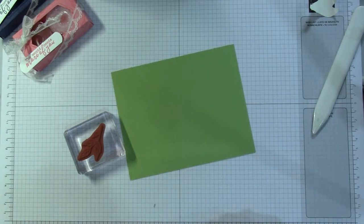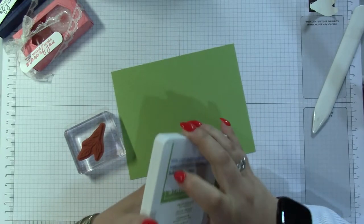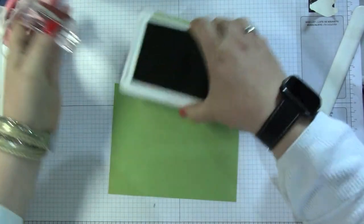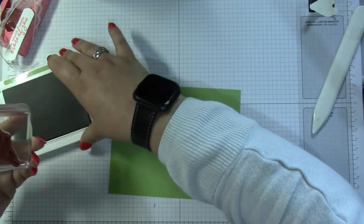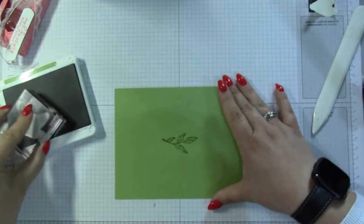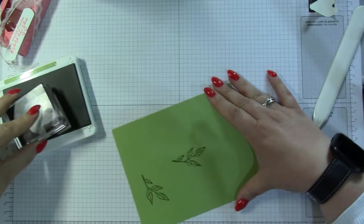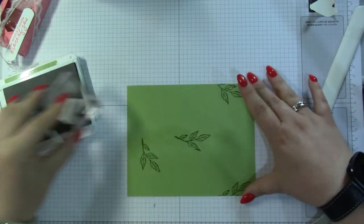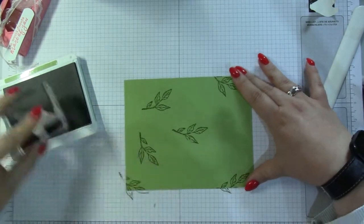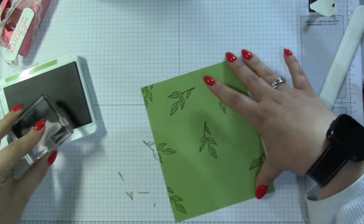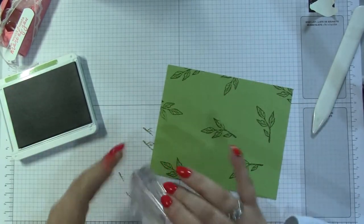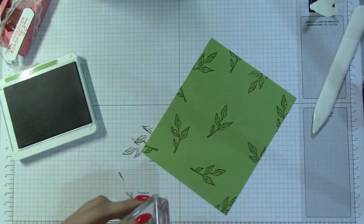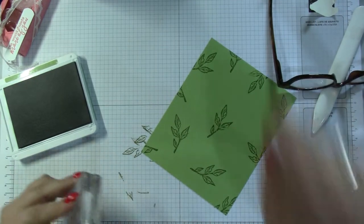I did have Pear Pizzazz ink. When you are doing your own DSP, which is what I'm doing here, always start with your largest image because then you can fill in with your smaller images. Doesn't that look fabulous. Sometimes it's easy just to rotate the piece of paper and come on and off the paper as well. I've got my stamp scrub next to me to my right.